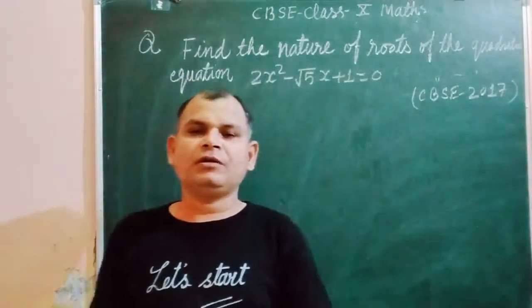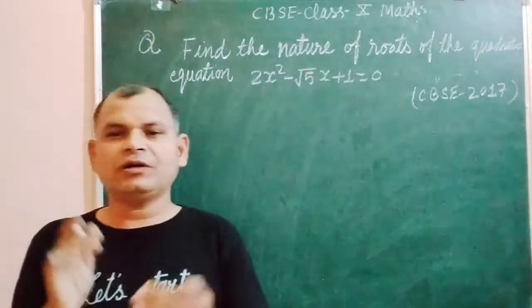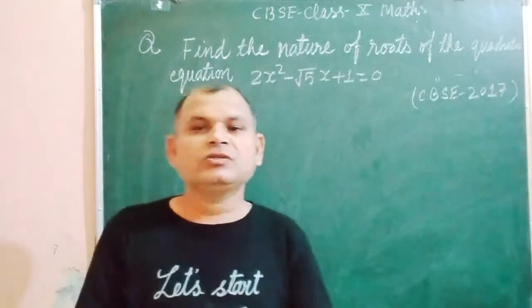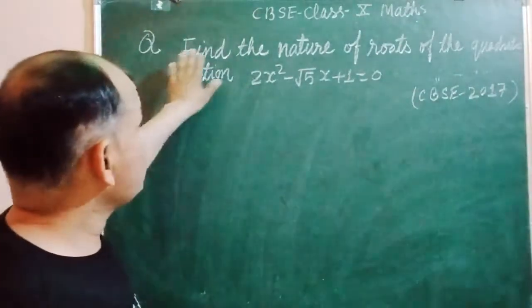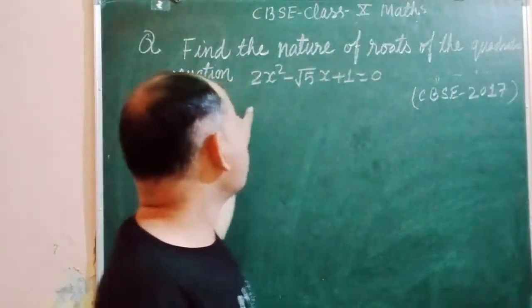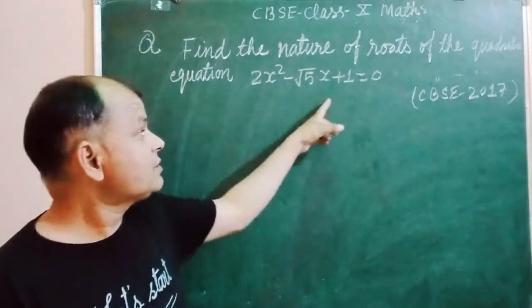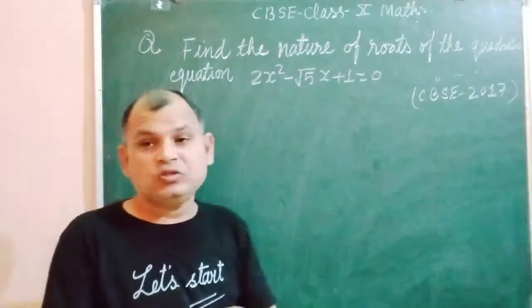Hello friends, welcome to my YouTube channel and you are watching CBSE Class 10 Mathematical Surveillance Series. So the question is, find the nature of the roots of the quadratic equation 2x² - √5x + 1 = 0.